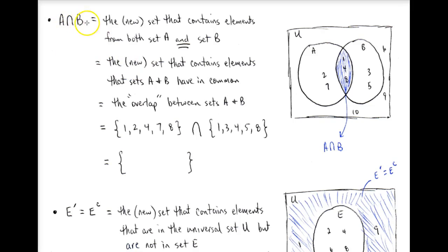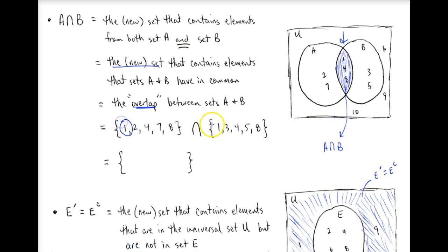Now we have the intersection of A and B — what both sets have in common. Looking at this from a Venn diagram standpoint, we should just have the set with elements 1, 4, and 8. We see that 1 shows up in both, 2 doesn't show up in both, 4 does, 7 doesn't show up in both sets, but 8 does. So A intersection B is {1, 4, 8}.